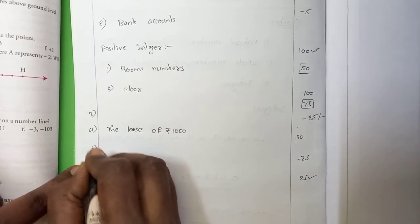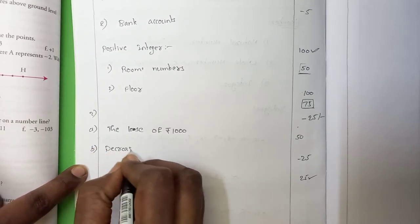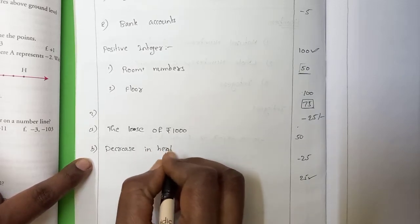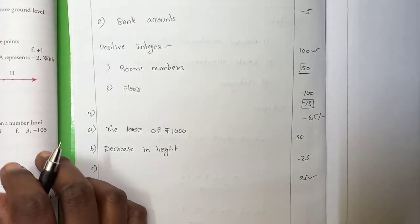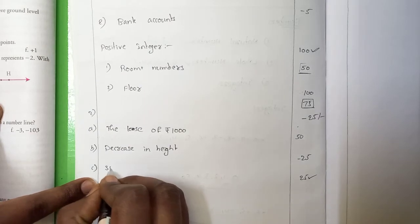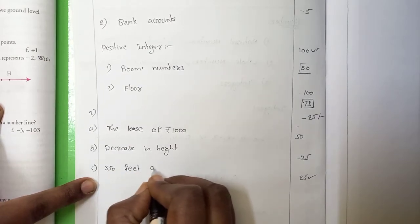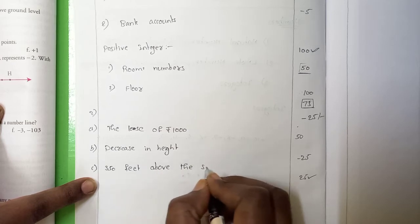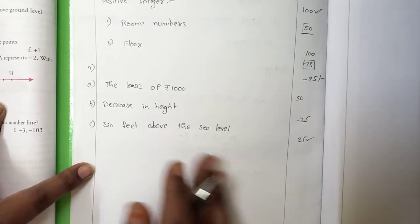Next, B: increase in height — opposite means decrease in height. C: 350 feet below the sea level — opposite means 350 feet above the sea level. Simple questions — we just have to know English. For D, E, F — do them on your own in the maths homework.